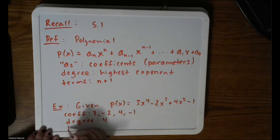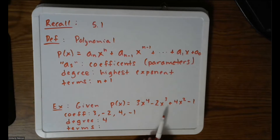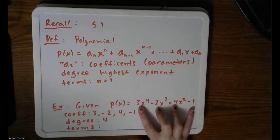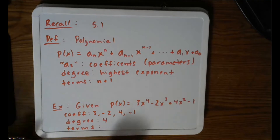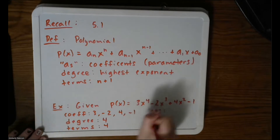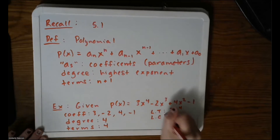Looking at our example polynomial, how many terms are there? We have 1, 2, 3 — but then I also have the constant, so I have 4 terms: the leading term, then the cubic, then the quadratic, then the constant. I just mentioned the leading term is the one with the highest exponent, 3x to the fourth. So the leading coefficient is 3.